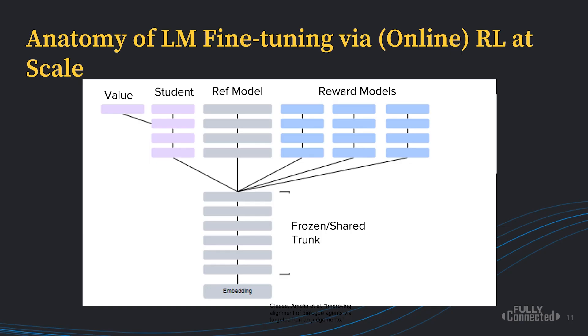However, TRLX leverages a recent architecture introduced by DeepMind's Sparrow paper called the Hydra architecture, which fuses together all these models into one shared trunk with shared layers. This is made feasible by the fact that most of these models have their layers frozen — the reference model is frozen, the reward models are frozen and just being inferenced. Really it's just the student that we're training, and in many cases it doesn't even make sense to train the majority of the student anyway. We find that in some cases this can save up to 75% of the memory required otherwise, making it more accessible to all user groups.